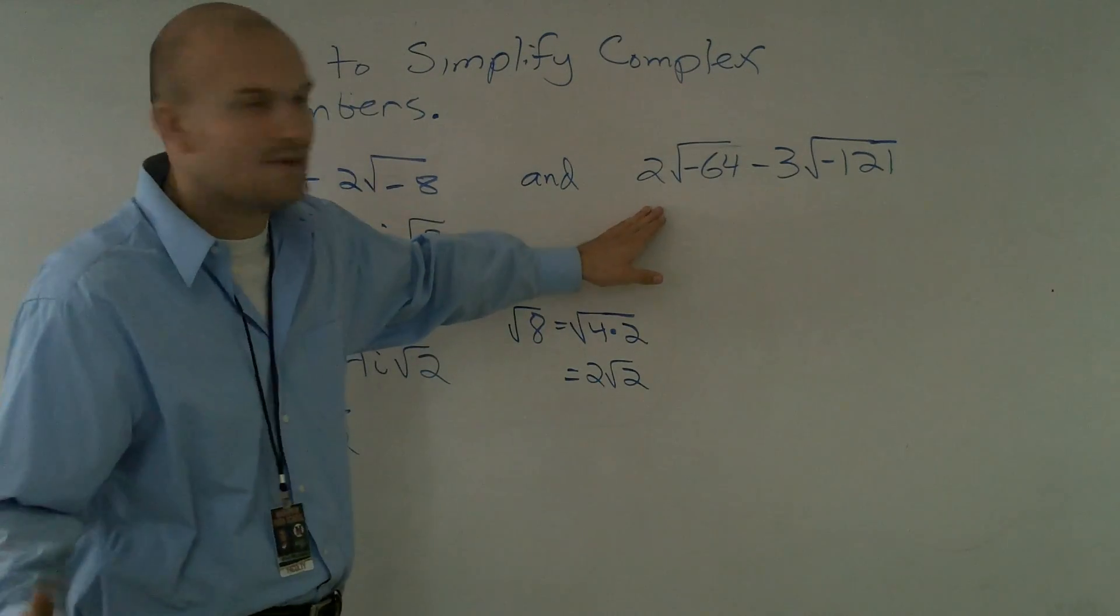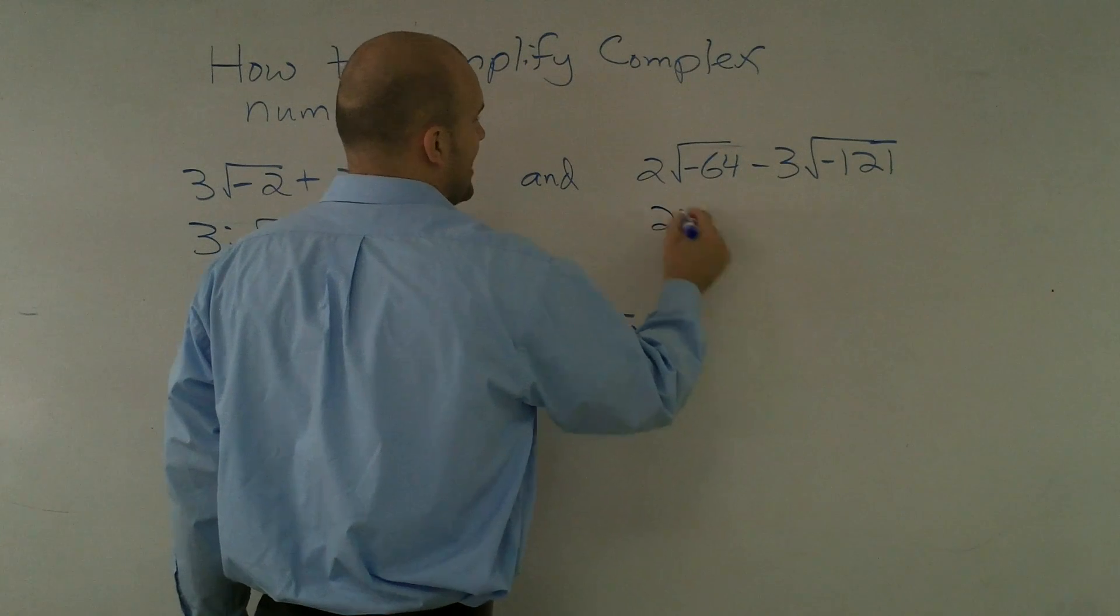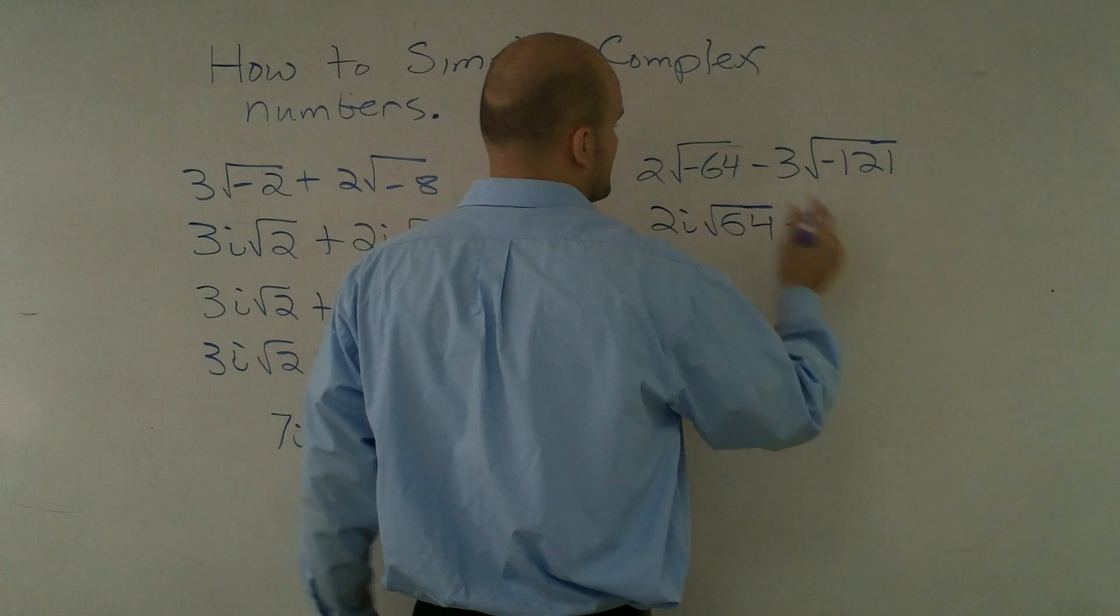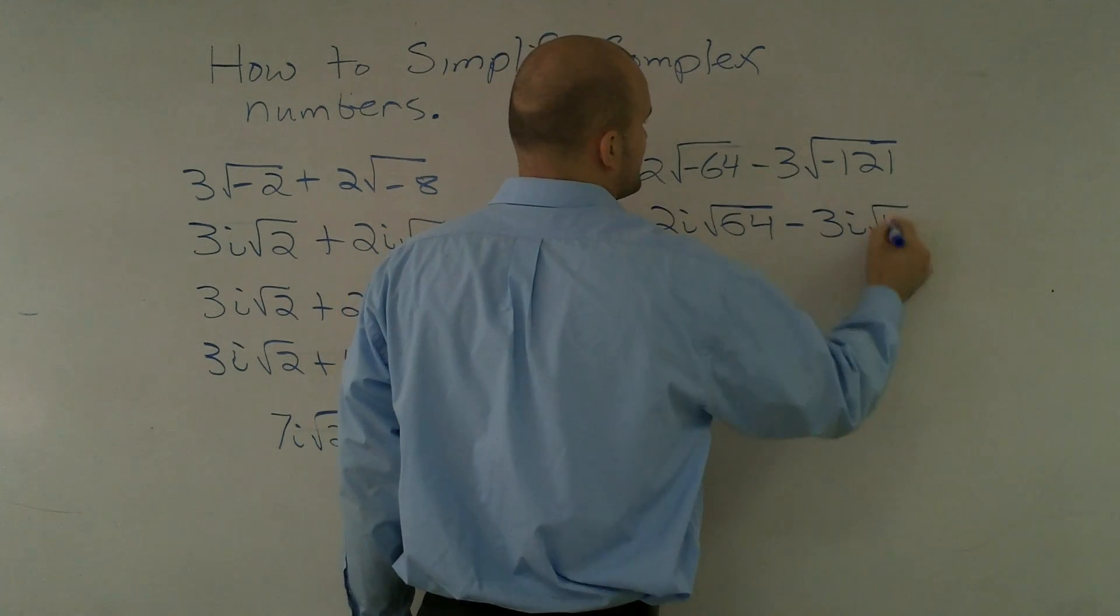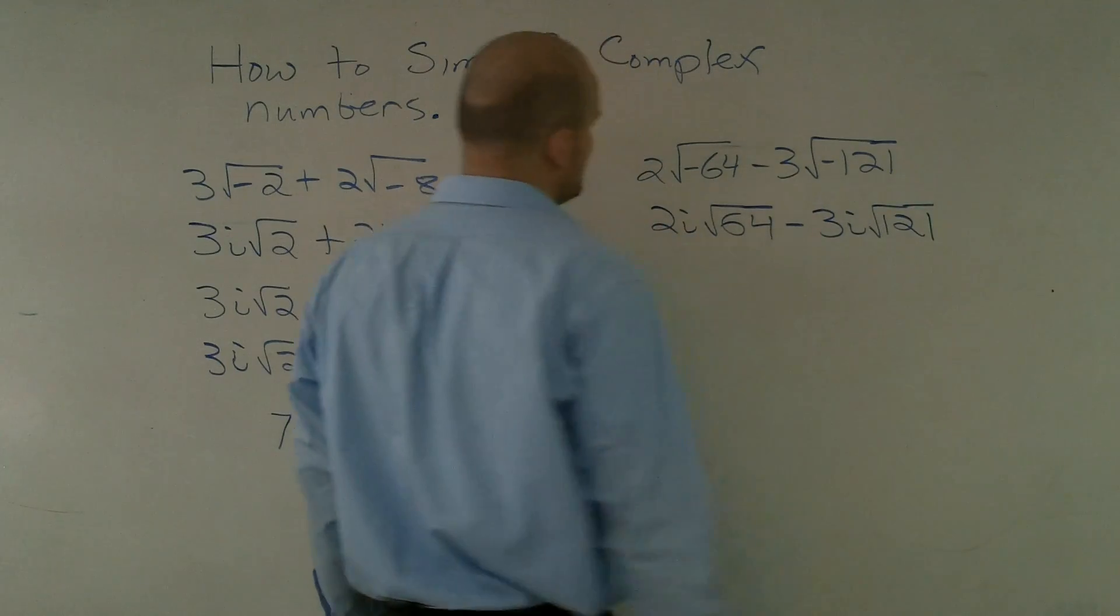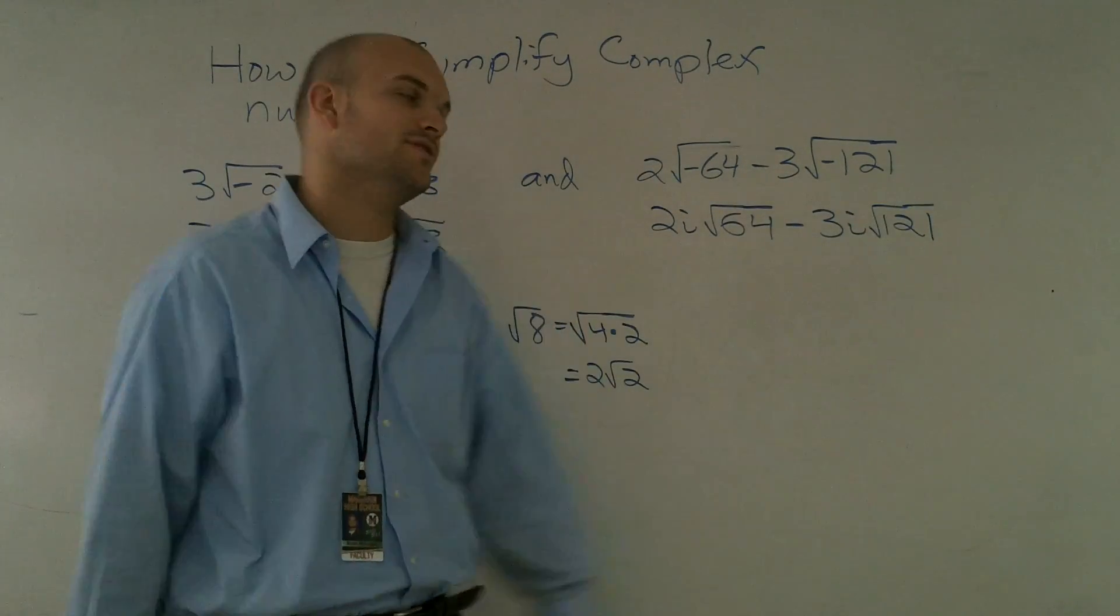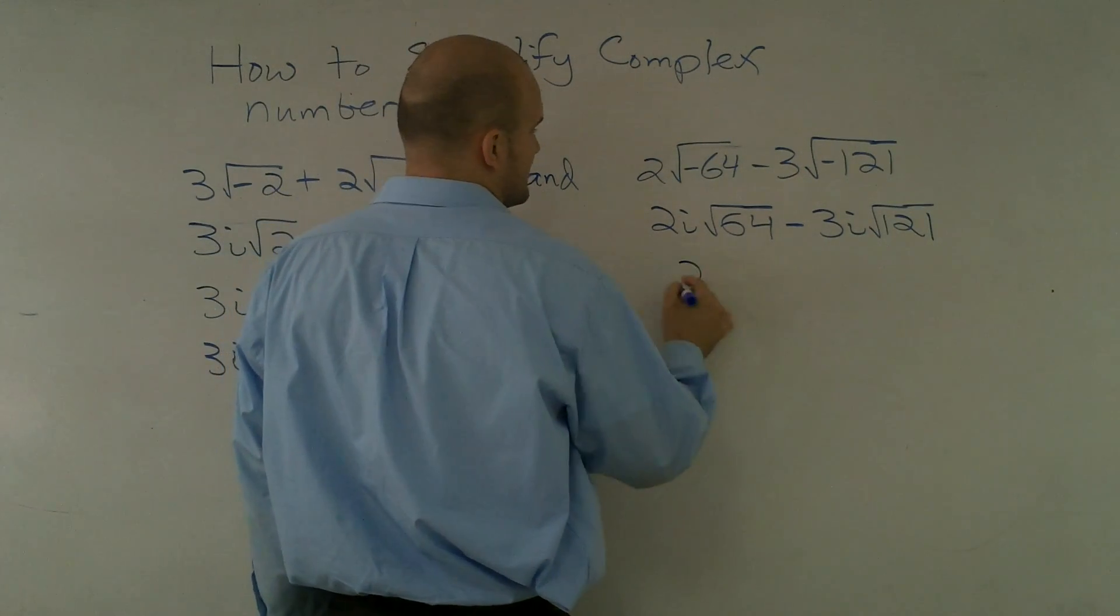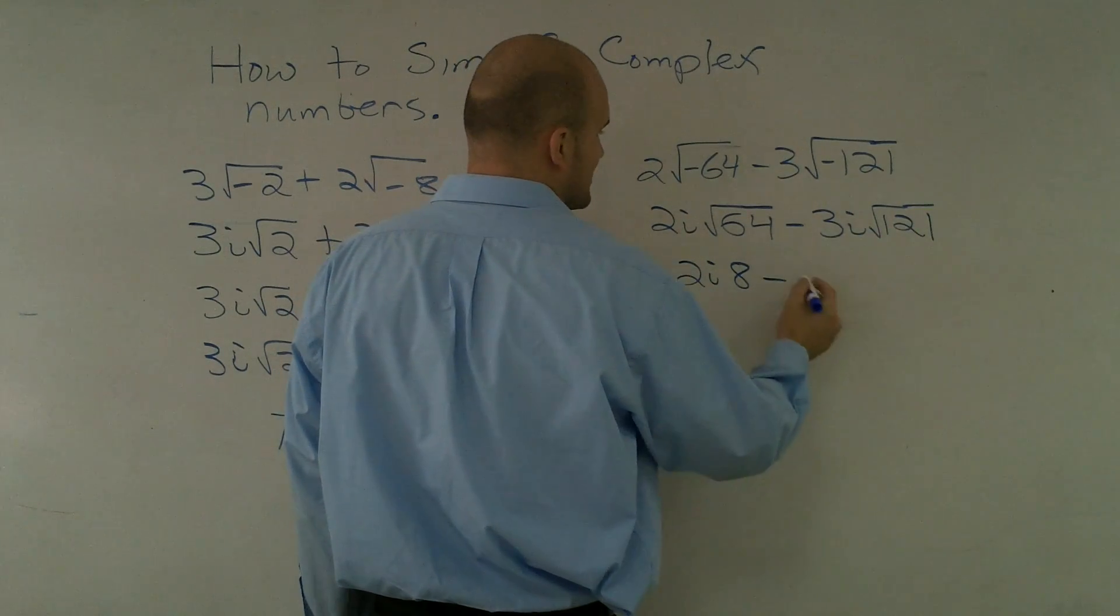Over here, again, I'm going to do the exact same operation. I'm going to take out my negative and make it an i. So 2i times the square root of 64 minus 3i square root of 121. Here, I'm a little bit lucky. I noticed that these are both square numbers. So I can simply just go ahead and take the square root. The square root of 64 becomes 8 minus 121 is 11.